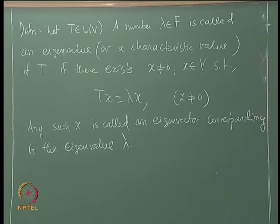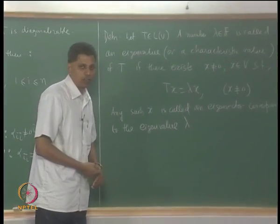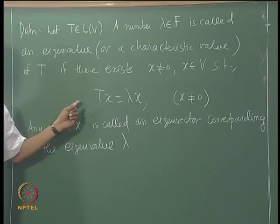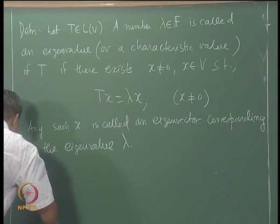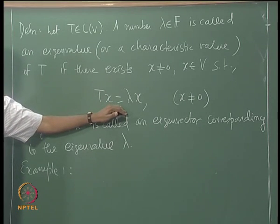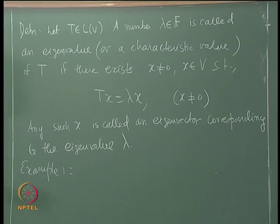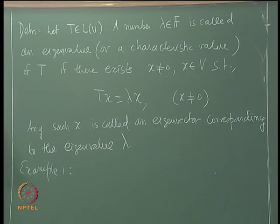Do all linear transformations have eigenvalues? First, observe that finding eigenvalues is really solving a homogeneous equation: T(x) = lambda * x is equivalent to (T - lambda*I)(x) = 0, and in matrix form (A - lambda*I)x = 0. Let us look at a simple example: the rotation transformation. Recall that T(x) = lambda*x means the resultant vector must be along the direction of x — a scalar multiple of x.